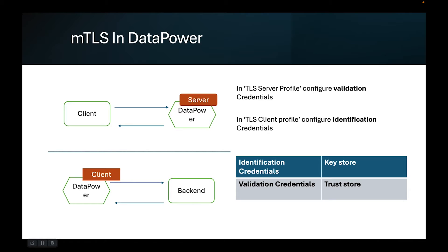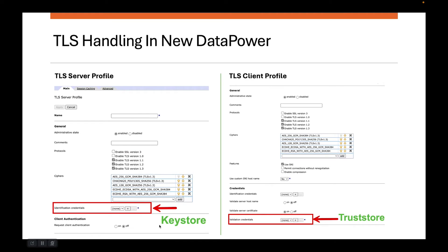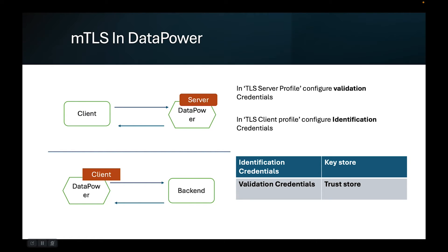For the scenario where DataPower is acting as a TLS server, you configure a TLS server profile. But in this TLS server profile, you also need to configure the validation credential. Where are the validation credentials in TLS server profile? They will appear once you enable the radio button called 'Request Client Authentication' at the bottom. When you turn that on, a validation credential section will come up and you configure it there. You must trust the certificate that is supposed to come from the client side, otherwise this mutual TLS scenario will not work.